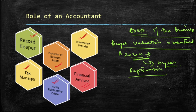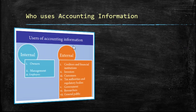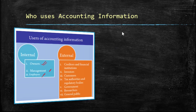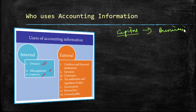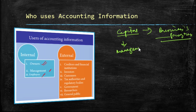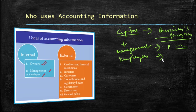Now, who uses this accounting information? There are two groups of users. The first is internal users — the owner, management, and employees. Owners are those who provide capital and are therefore interested in the business's progress. Management is also interested in the business's progress. Lastly, employees want to know about the progress of the business — whether there is scope for an increment in salary or bonuses. All these parties are interested in accounting information.